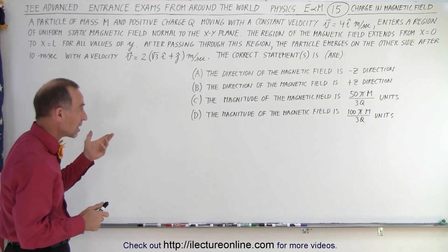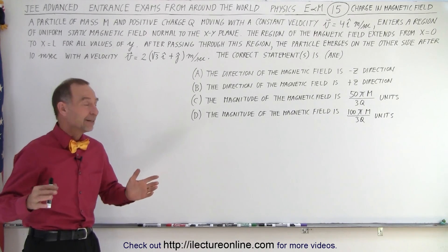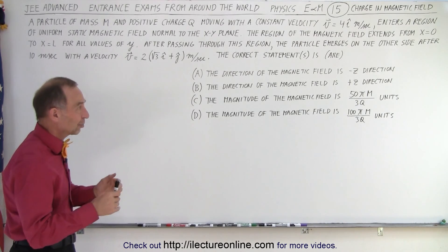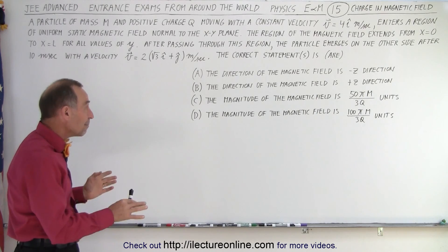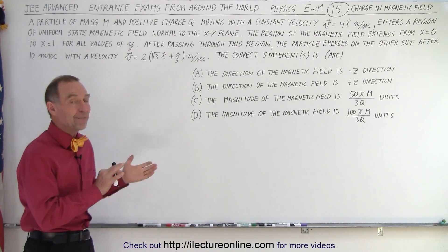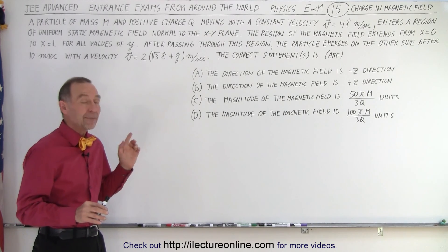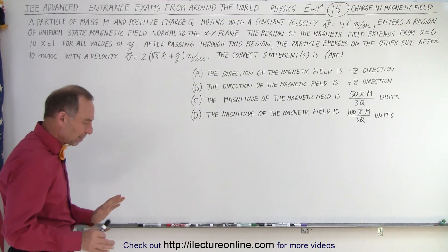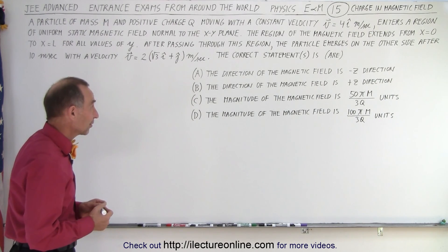If I look at the first two, a and b, one of those has to be correct, right? The magnetic field will be pointing in the positive z direction or the negative z direction. Then c and d, maybe only one of those two may be correct, maybe both of them are wrong, but at least one may be correct. Both cannot be correct between c and d. Let's draw a picture to see what's going on, otherwise it would be too difficult to figure this out.